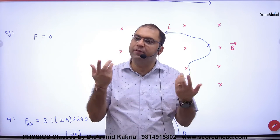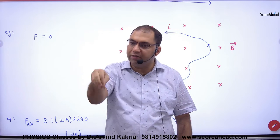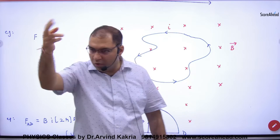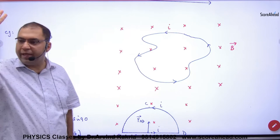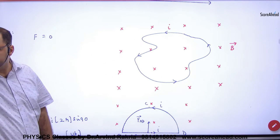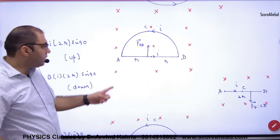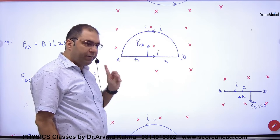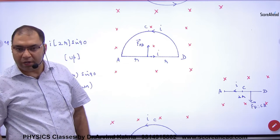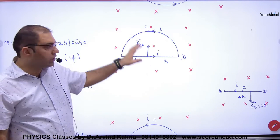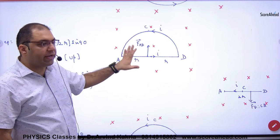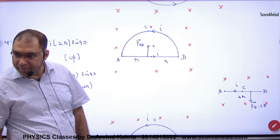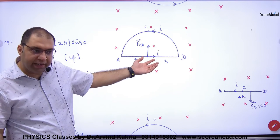The net displacement of a complete closed loop is zero. If net displacement is zero, then what is the value of the force? Zero. In a closed loop, the net force is zero. Is that clear?